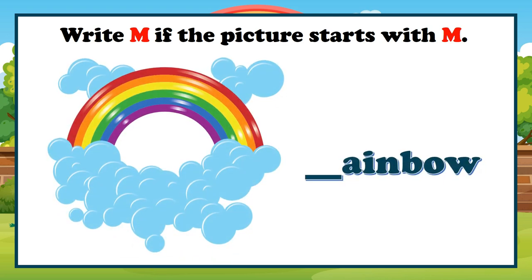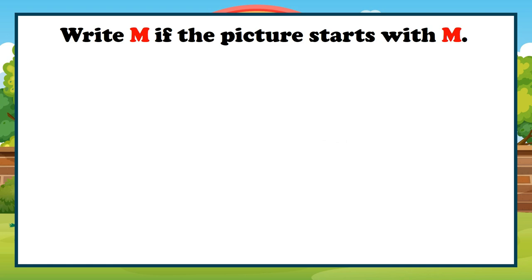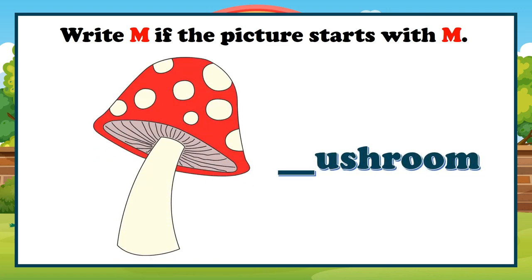How about this one? Does this begin with letter M? No! It begins with letter R for rainbow. Let's check this one. Does this begin with letter M? Yes! M for magnet. How about this one? Does this begin with letter M? Yes! M for mushroom.